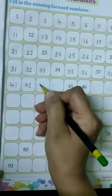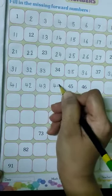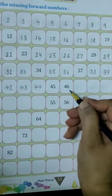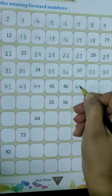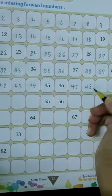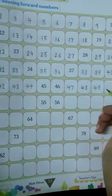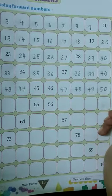42, 43, 44. 45 and 46 are already written in the boxes. So write 47, then 48, 49, and finally write 50.